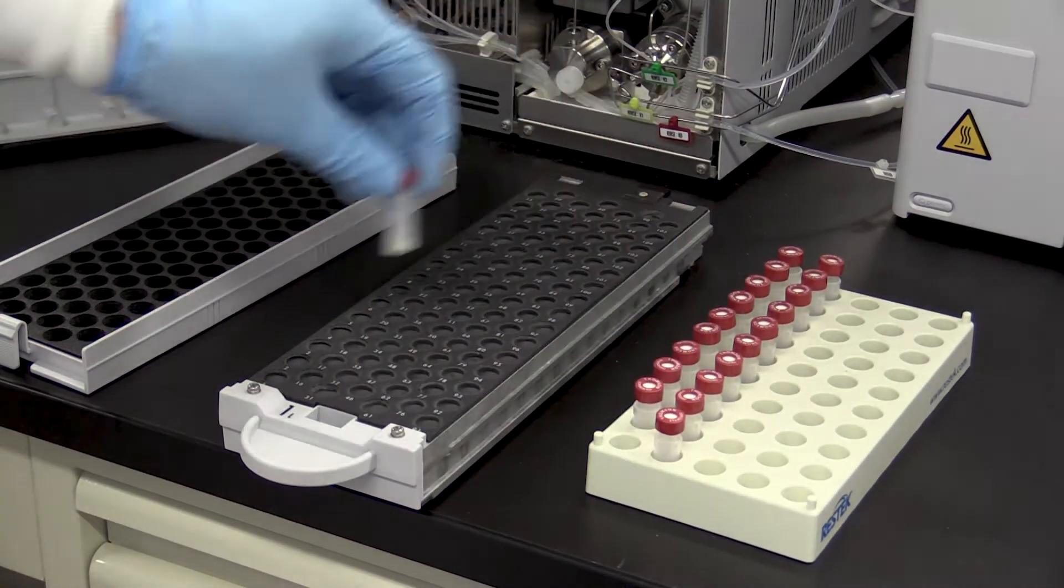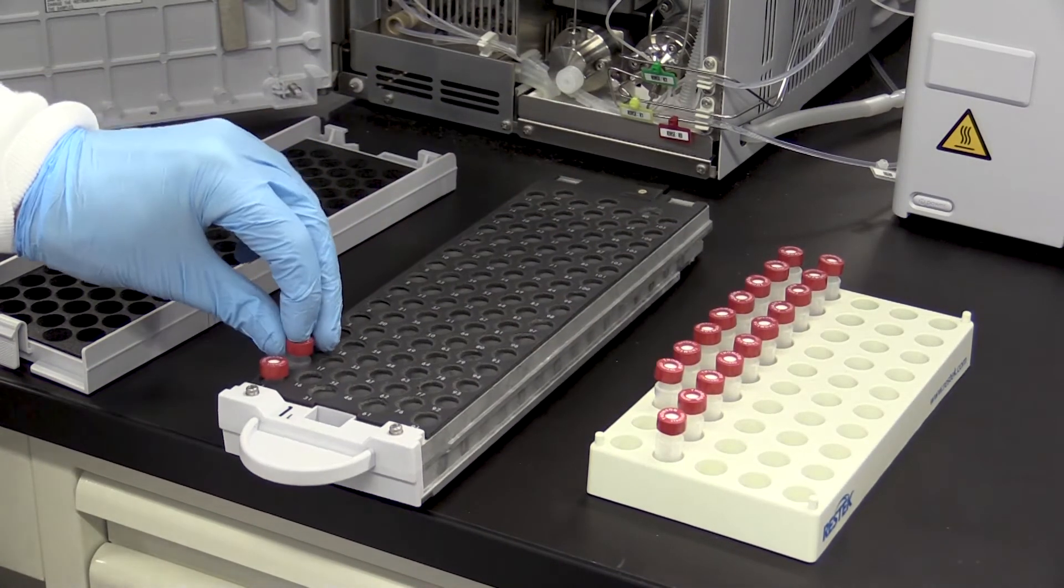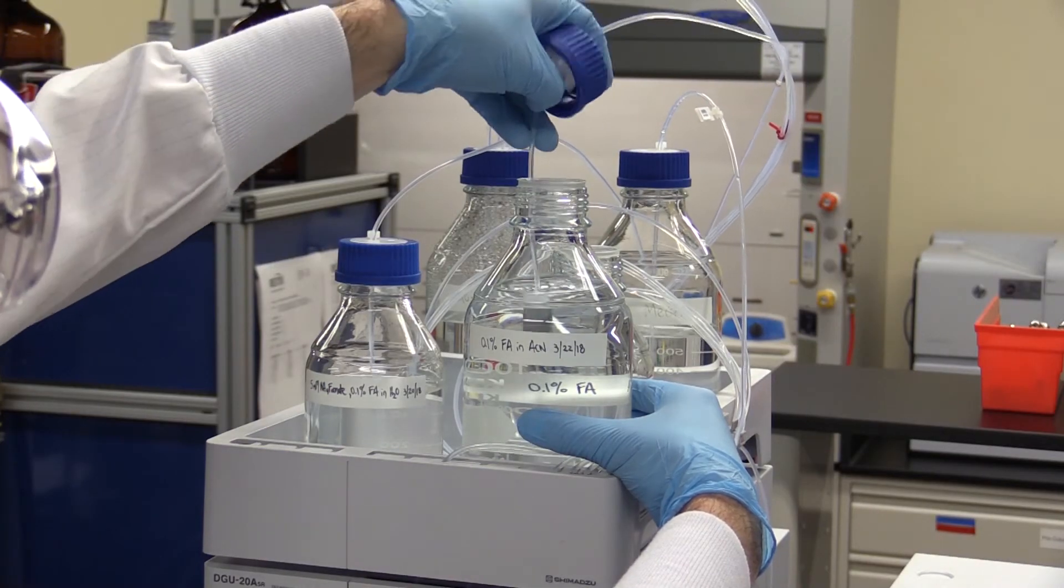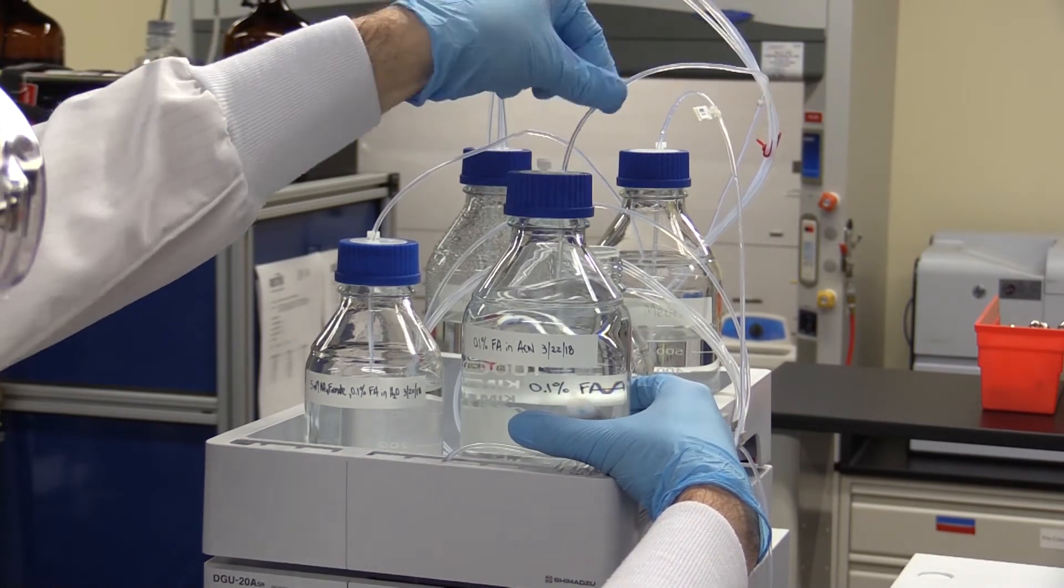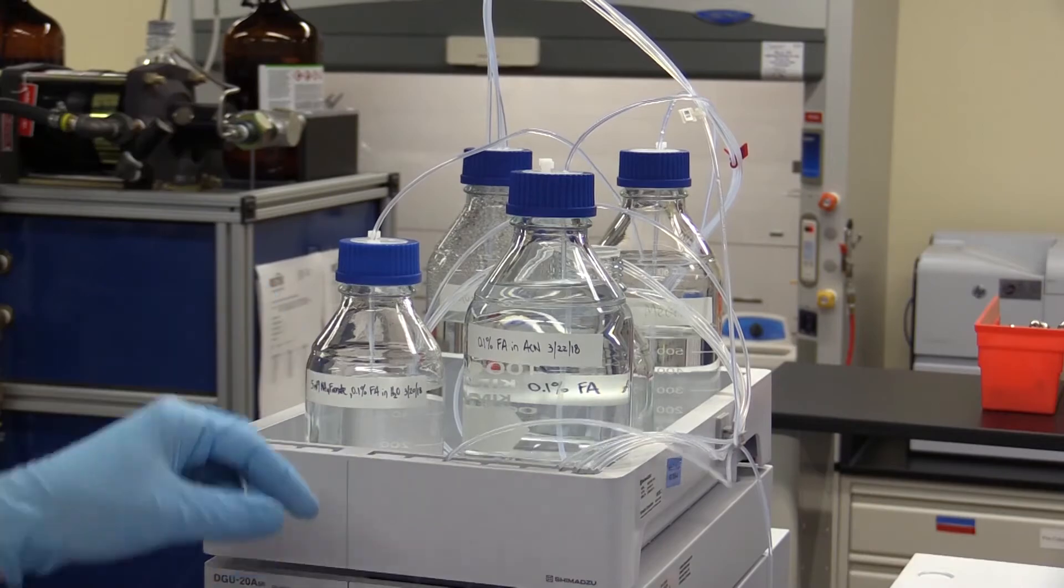Once all of your samples are prepared, place them in the auto-sampler tray. Before you start your analysis, make sure your mobile phases are freshly prepared and that you have sufficient mobile phase for the number of samples you're analyzing. In addition, using bluestem filters helps provide clean mobile phase to extend the lifetime of your column and pump seals.